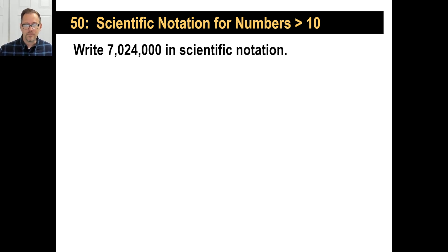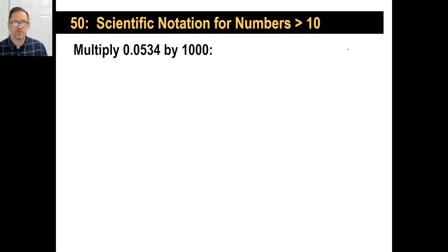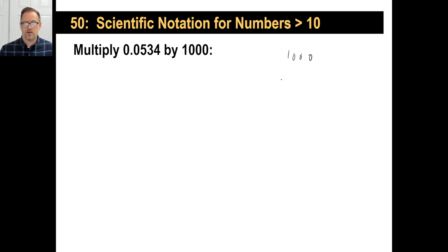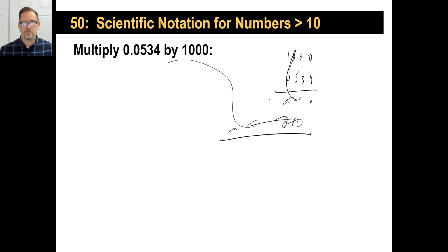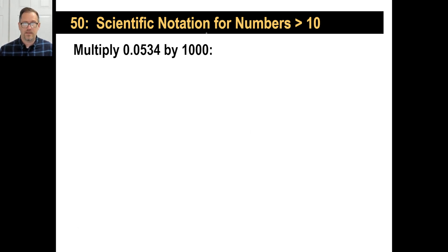What you do is you have the first number between 1 and 10 — not including 10, but it can be 1 — and you're going to multiply it by the numeral 10 to the power of whatever that is. So let's look at this: if you multiply 0.0534 by 1,000, please don't multiply it out the long way. Just take the number — if you multiply by 1,000, you have three zeros, so you move the decimal place over three times. The answer is 53.4.